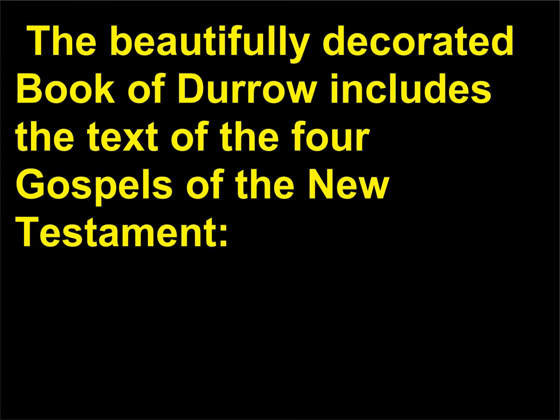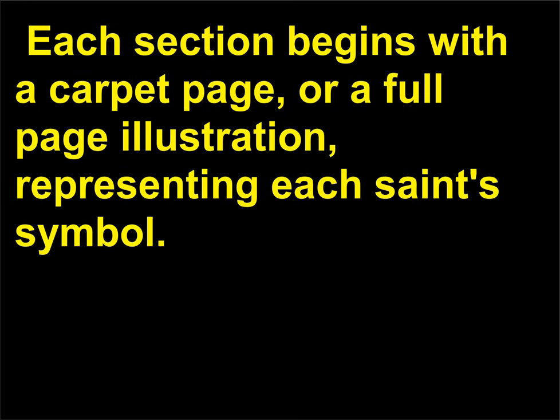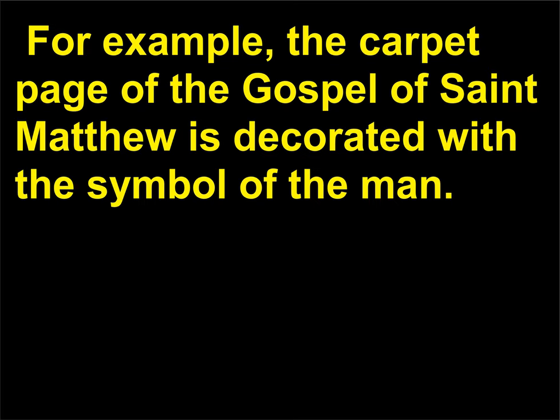The beautifully decorated Book of Doe includes the text of the four Gospels of the New Testament: Matthew, Mark, Luke, and John. Each section begins with a carpet page, or a full page illustration, representing each saint's symbol. For example, the carpet page of the Gospel of Saint Matthew is decorated with the symbol of the man.